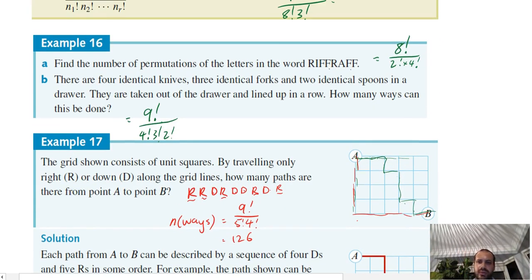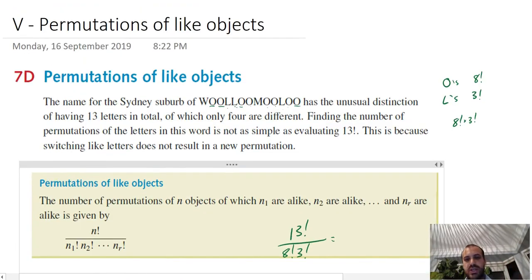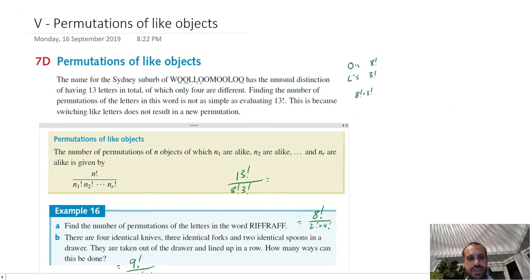I really like that question. I haven't really played with one like that before, but it's pretty cool. That is permutations of like objects. You've got a neat little formula for it, but try to think about how that formula works and why it works.